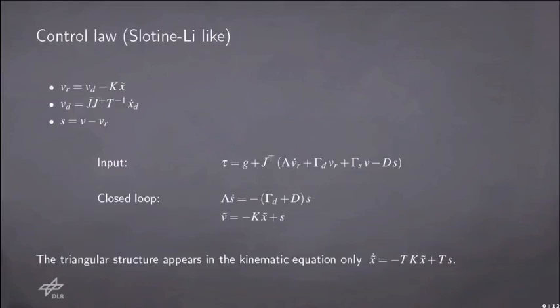At this point, in the spirit of the Slotine-Li control law, one has to define the reference velocity vr and the sliding variable s, where the main difference is that we use the velocity V rather than the velocity X dot. Those of you familiar with the Slotine-Li controller will recognize that actually the torque tau is very similar to the usual control law that one writes down in the Slotine-Li case. The main difference here is that the matrices that appear, so both the Jacobian J-bar and the transformed inertia and Coriolis matrix have the dimension of the tasks, so are bigger matrices compared to the degrees of freedom of the robot.